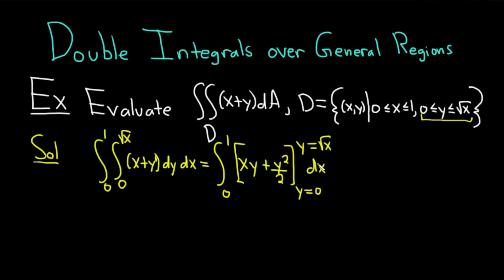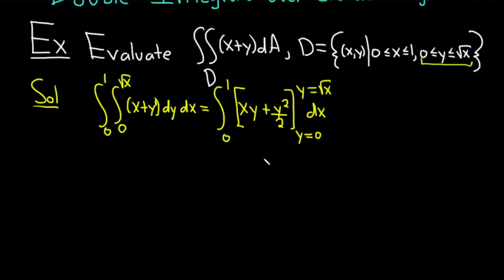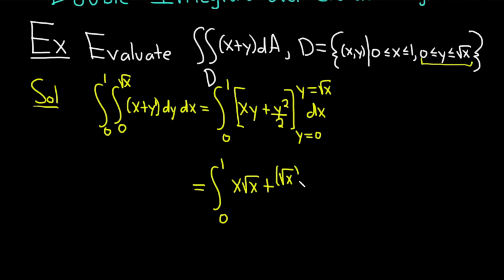And then we also still have the dx. This is really more of an exercise in notation — it's really important to be careful and write down everything very correctly. This is equal to the definite integral from 0 to 1. First, we plug in the top function, y equals square root of x, into y. That gives us x times the square root of x, plus the square root of x squared over 2. Then we subtract and plug in 0, but everything is 0 in that case, so we don't have to write it.